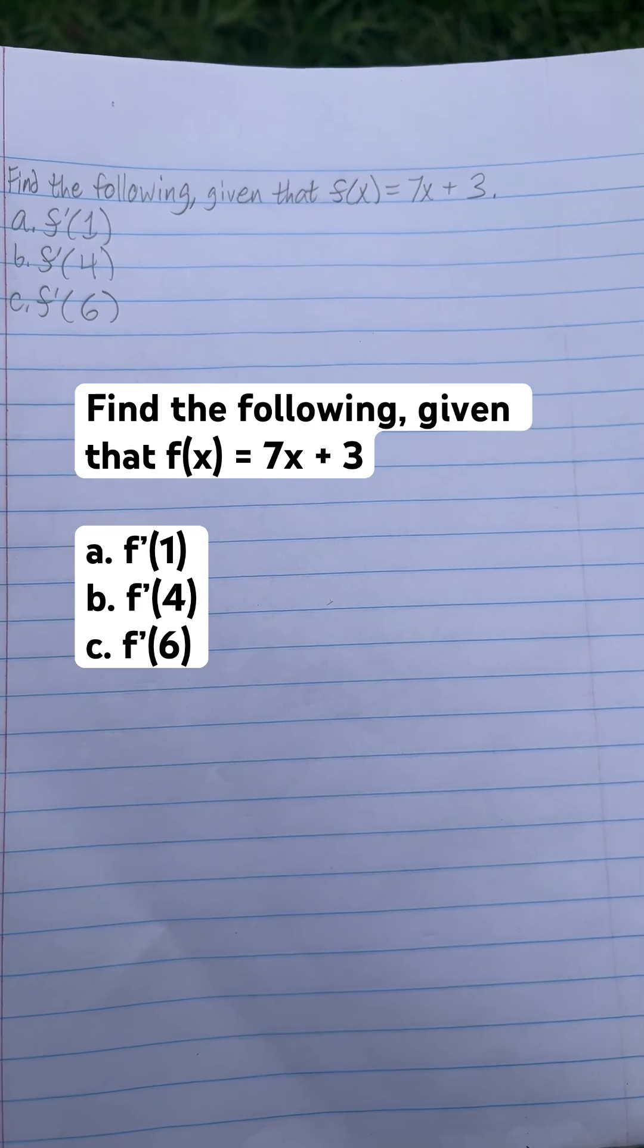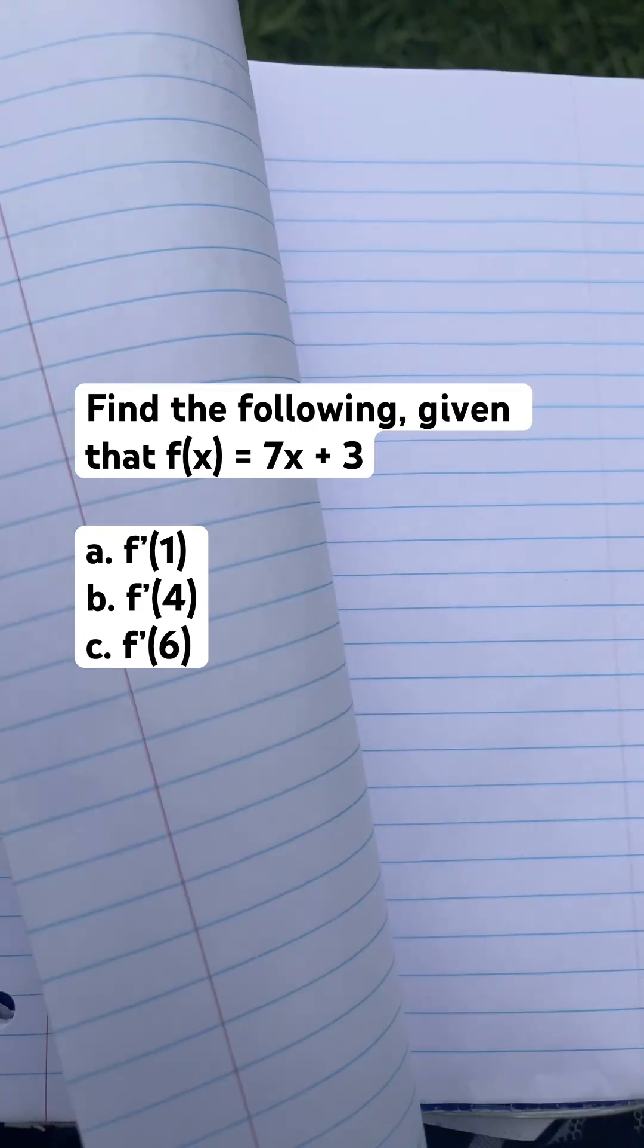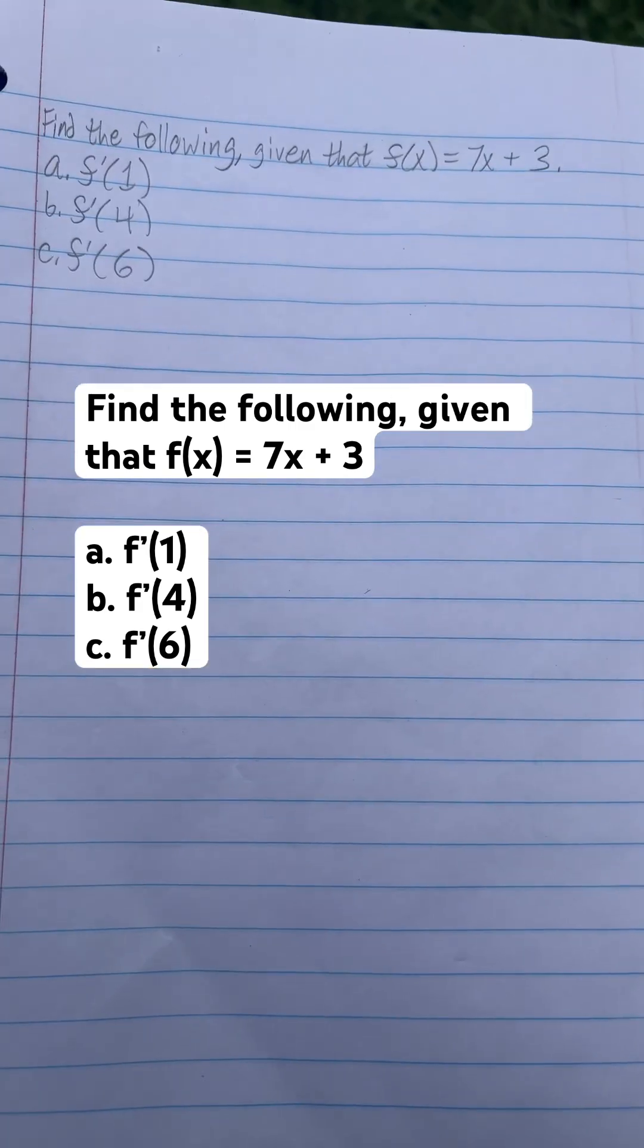Find the following, given that f(x) = 7x + 3. You got part a, derivative f(1), b, derivative f(4), and c, derivative f(6).